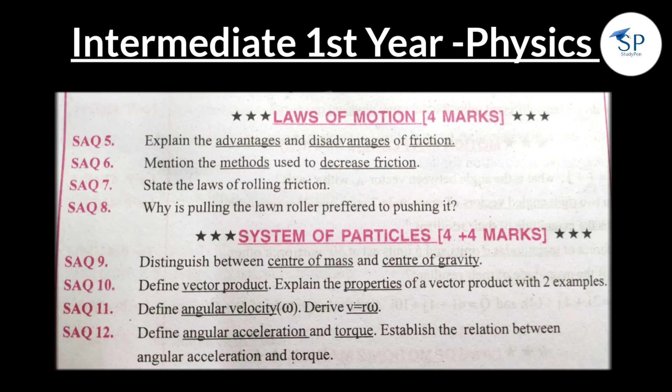Next, System of Particles — 2 questions. Distinguish between center of mass and center of gravity. Define vector product and explain the properties of vector product with two examples. Also, derive that v equals r omega, and define angular acceleration and torque and establish the relation between angular acceleration and torque.